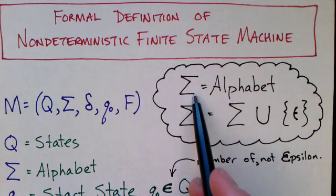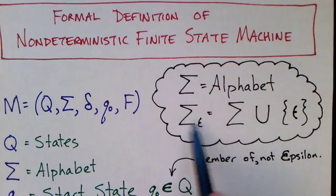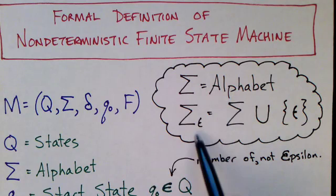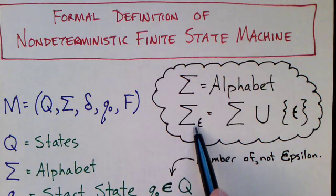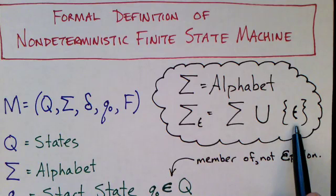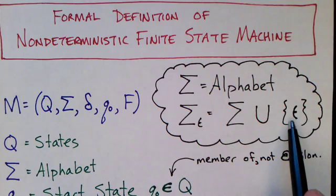In this slide and throughout these videos, we're going to use this notation. If sigma represents our alphabet of symbols, then we're going to use a subscript of epsilon, sigma sub epsilon, to basically say we're augmenting sigma by adding epsilon to it. So union, set of epsilon. So we're adding epsilon.